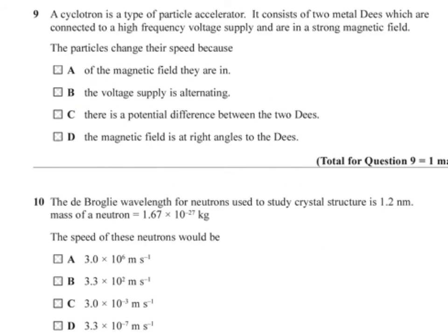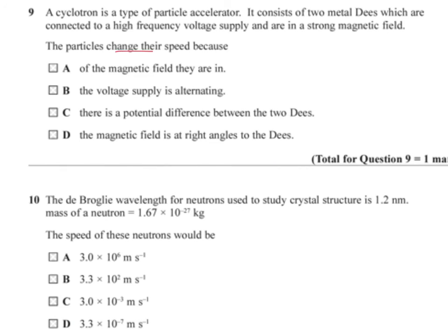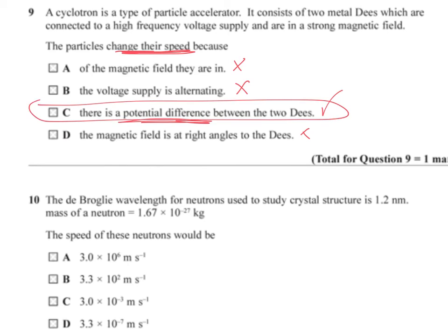Question 9. A cyclotron is a type of particle accelerator consisting of two metal D's connected to a high frequency voltage supply in a strong magnetic field. The particles change their speed because the acceleration happens between the D's — the circular motion inside is due to the magnetic field. The voltage supply is alternating, and there is a potential difference between the D's. The magnetic field is at right angles to the D's, so the reason for speed change is the PD between the D's.